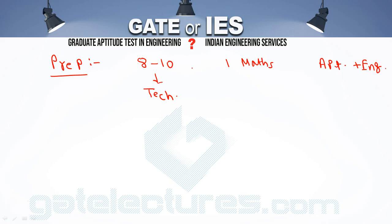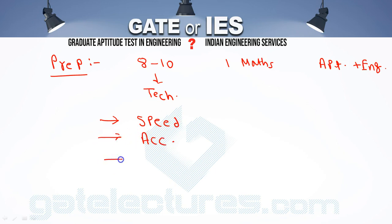For GATE preparation, three key things you need are: speed, accuracy, and a logical mind. If you have developed these through your preparation, your preparation is complete. These are the three things required to excel in GATE.